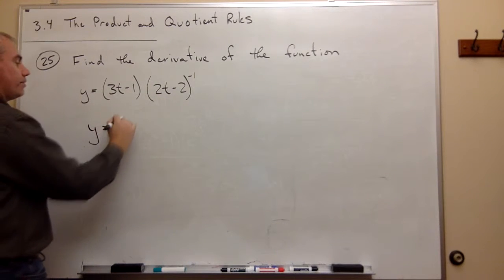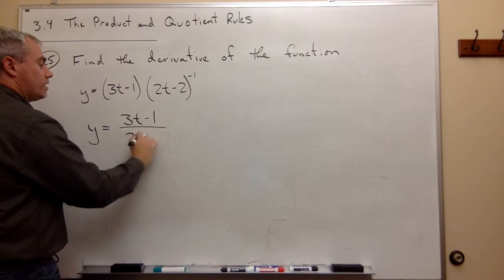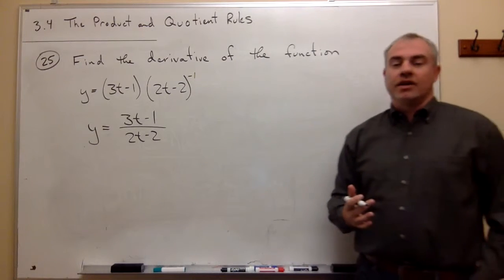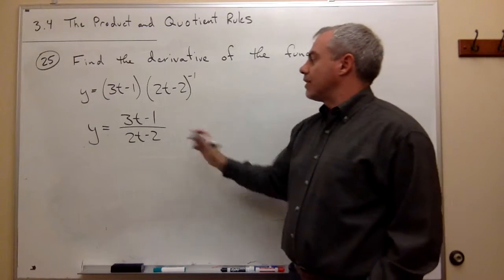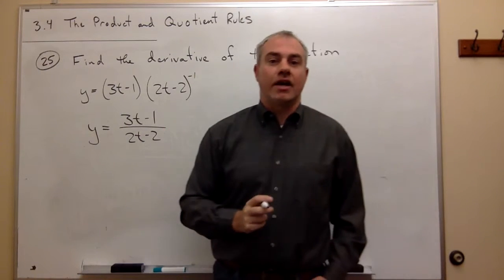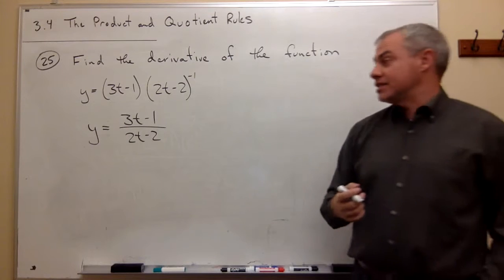This is y equals 3t minus 1 divided by 2t minus 2. So I just rewrote it. These are exactly the same thing. And now we can see that this is a quotient, and so we should use the quotient rule on it to take the derivative.